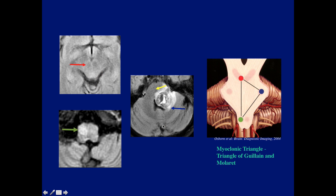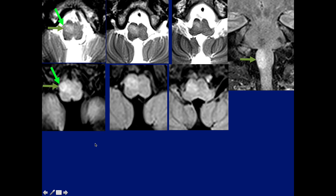If we now look at the case I showed before: this is the region of the dentate, and here we see the red nucleus may be a little less dark than its companion, and then we see the changes in the olive. These are the structures involved by the components in the triangle.